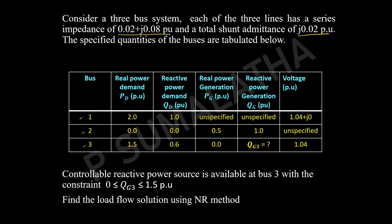They have given three buses. The first bus has real power demand and reactive power demand; real power generation and reactive power generation are unspecified. Voltage is 1.04 + j0. The second bus has real power generation of 0.5 and reactive power generation of 1, and the voltage is unspecified. The third bus has real power demand and reactive power demand; there is no real power generation. Reactive power generation and voltage magnitude are to be determined.